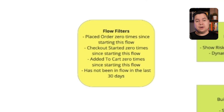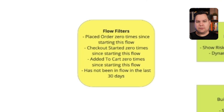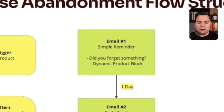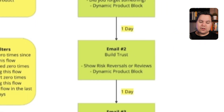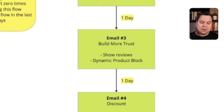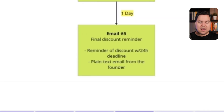If someone is adding a product to their cart, started the checkout, or has placed an order, they won't receive this flow — or the rest of the flow if they already received one of the first emails. We're also making sure that if someone has received this flow in the past 30 days, they won't receive it again. The structure of the flow: Email 1 is a simple reminder. One day later, Email 2 builds trust. One day later, Email 3 builds more trust. Email 4 shows a discount. And finally, Email 5 is the final discount reminder.